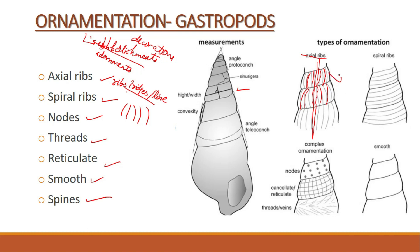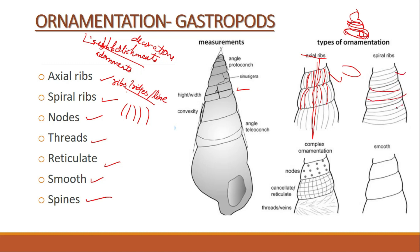Then we have spiral ribs. Spiral means something like this — round, twirled, that is spiral. Spiral ribs follow the same direction as the coiling. If this is your gastropod shell, then the ribs will be in a circular pattern — those are spiral ribs.